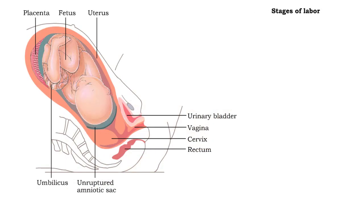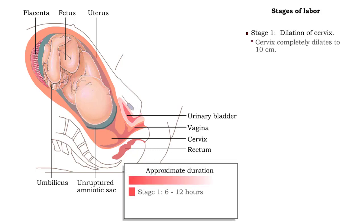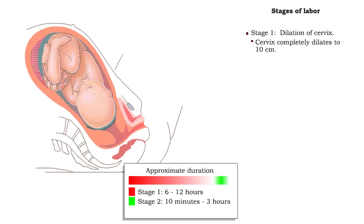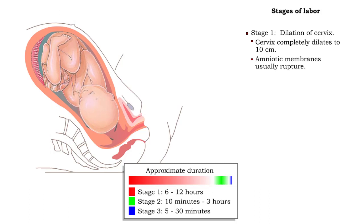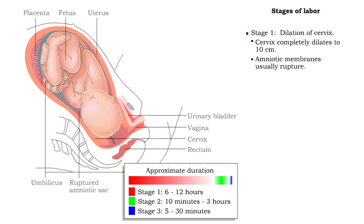The labor process is divided into three stages. During the first stage, the thick cervix thins and opens to a diameter of about 10 cm. Amniotic membranes usually rupture during this stage.